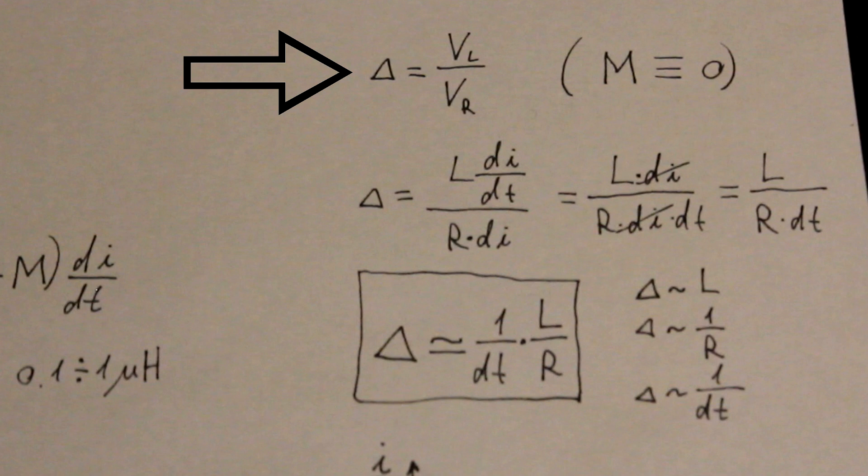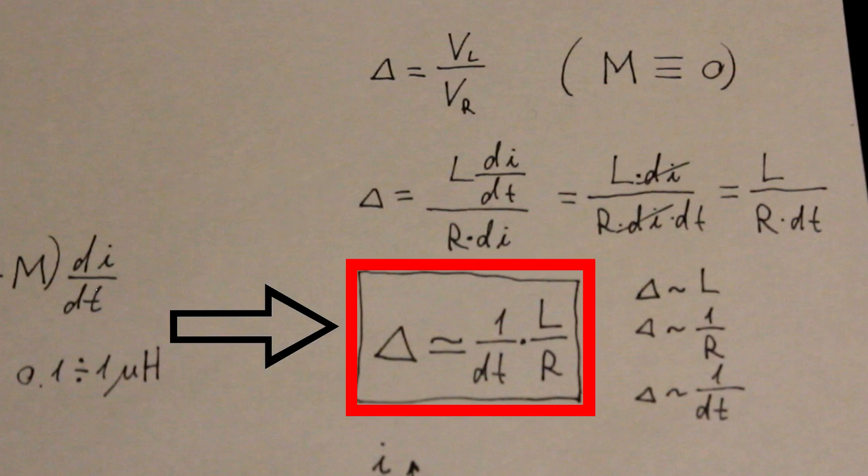Then, to find the relative error delta, we divide our error signal, which is L di over dt, by the useful signal R times di. As di is cancelled out, we get a formula for the relative accuracy of the shunt. As you can see, the error increases with the higher inductance L of the shunt and with shorter measurement time dt.